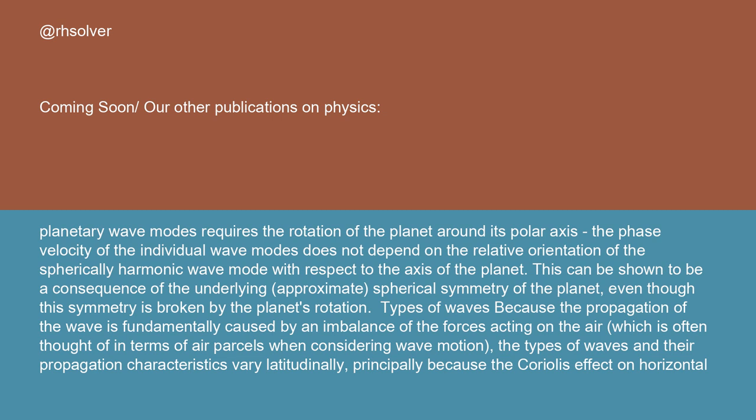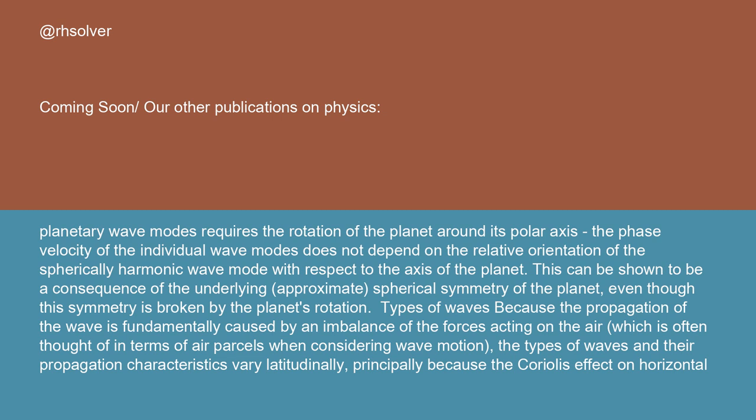Types of waves: because the propagation of the wave is fundamentally caused by an imbalance of the forces acting on the air — which is often thought of in terms of air parcels when considering wave motion — the types of waves and their propagation characteristics vary latitudinally, principally because the Coriolis effect on horizontal flow is maximal at the poles and zero at the equator.